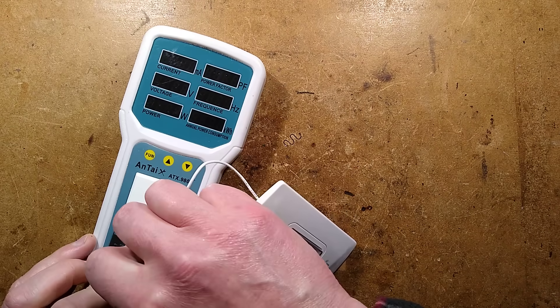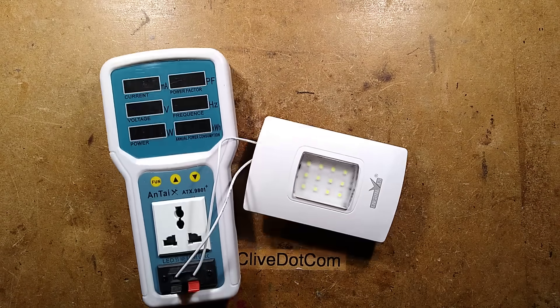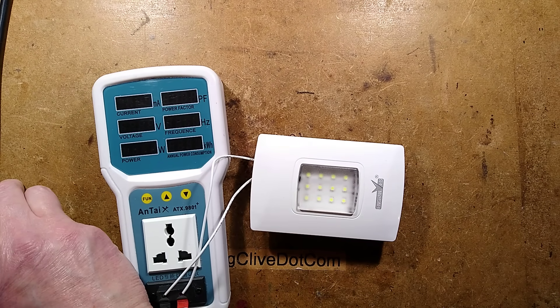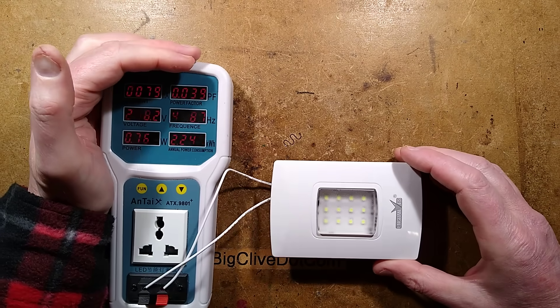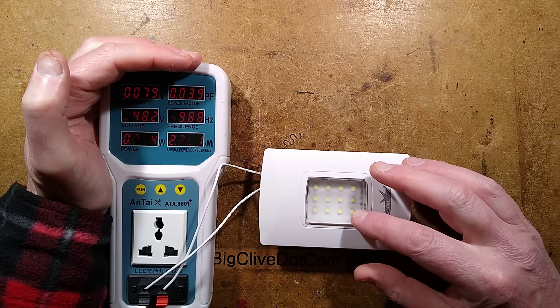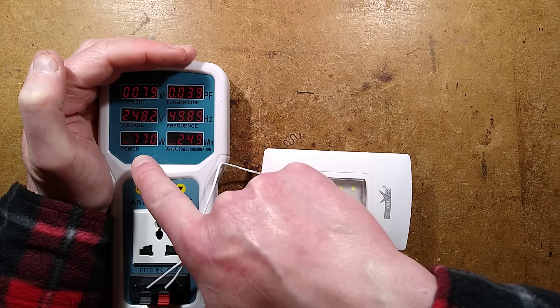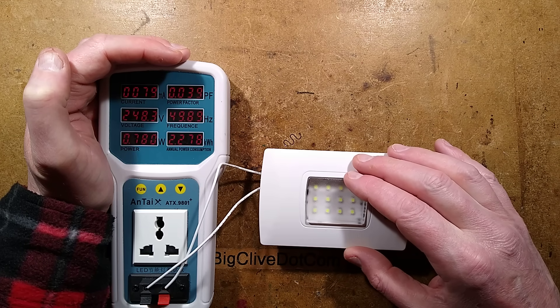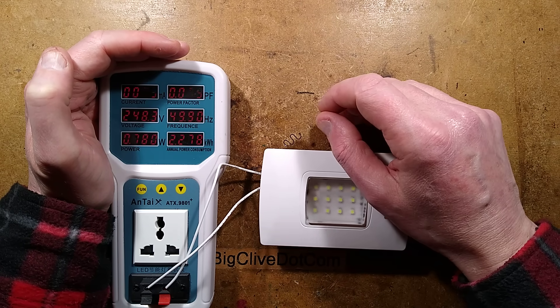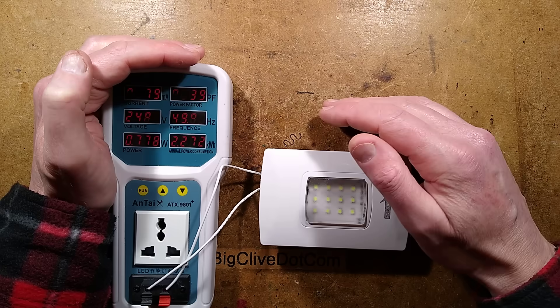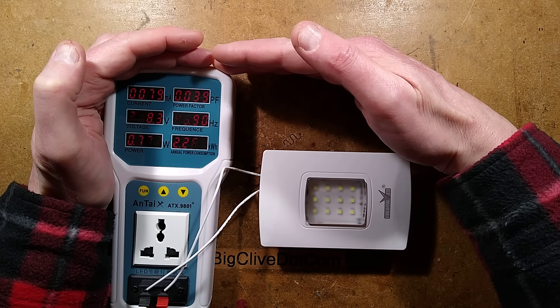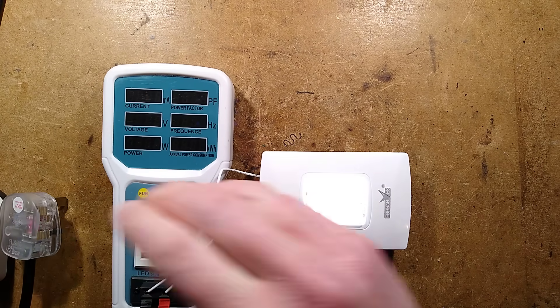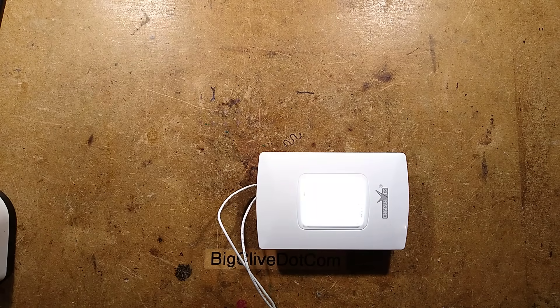I'm going to plug it in. No indicator that it's charging, which is a shame. It says 0.8 watts standby power, 79 milliamps is quite high, and a power factor that's miserable, 0.039. That kind of suggests it is a capacitive dropper again. What happens when we unplug it? Oh, it does light. That's good.